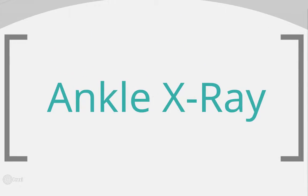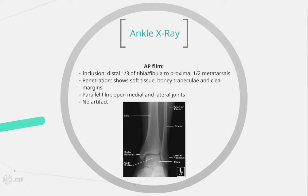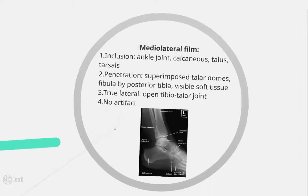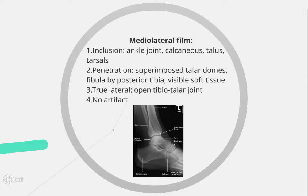On an AP ankle x-ray, you want to ensure that both the tibia and fibula are visible up to the metatarsals. Make sure that you can see the bony trabeculae and soft tissue margins. To exclude rotation, look at the medial and lateral joints — they should normally be open. On a medial-lateral ankle x-ray, check the penetration by looking for both talar domes as well as how the fibula and tibia are superimposed.